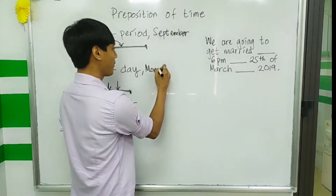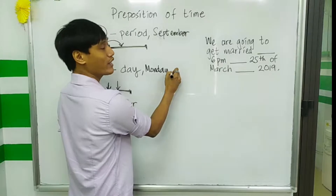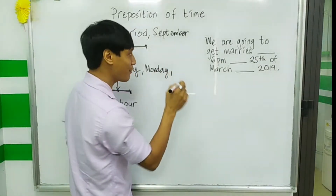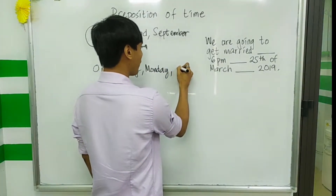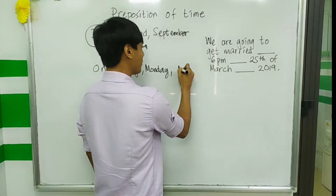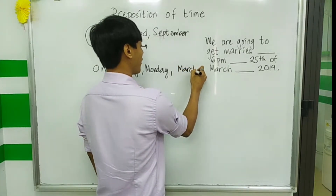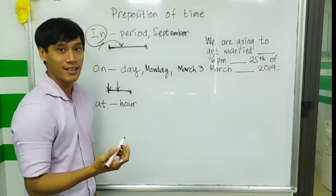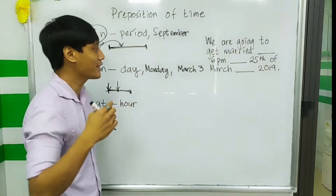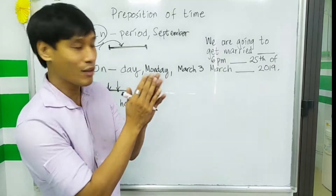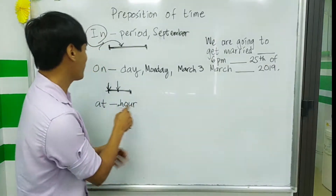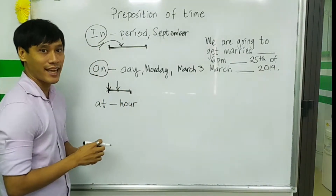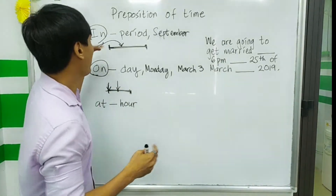We use the days — Monday, Tuesday, Wednesday — with 'on': on that specific day. For example, on March 3, 2018. So if it's a specific day, we use 'on'.